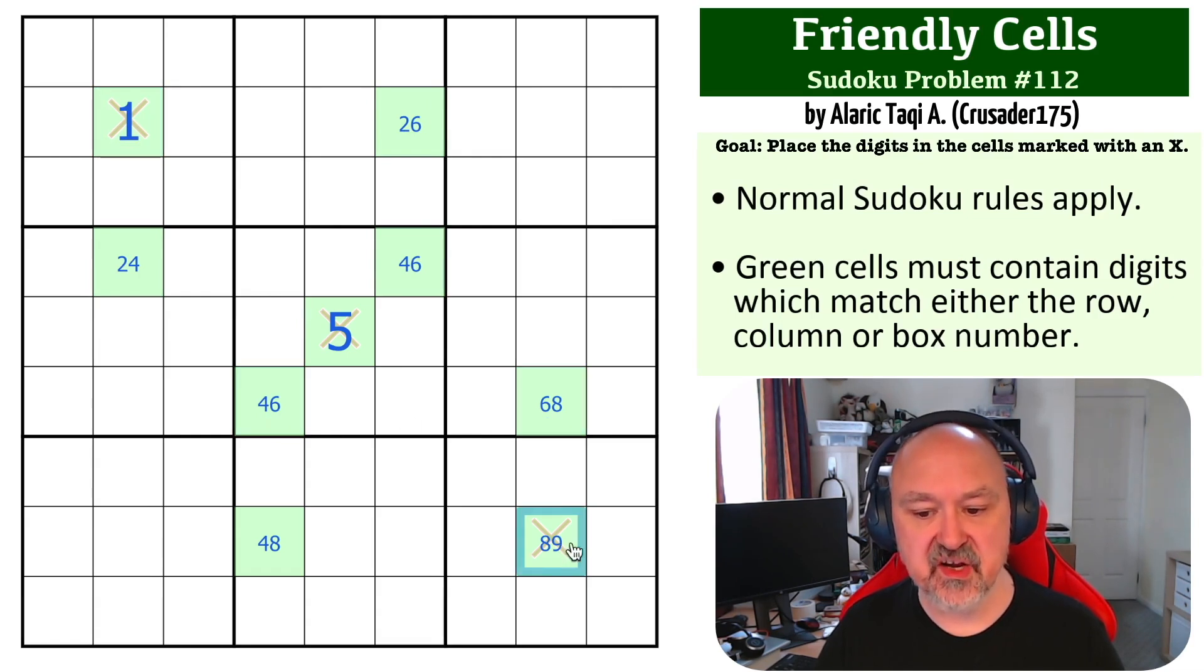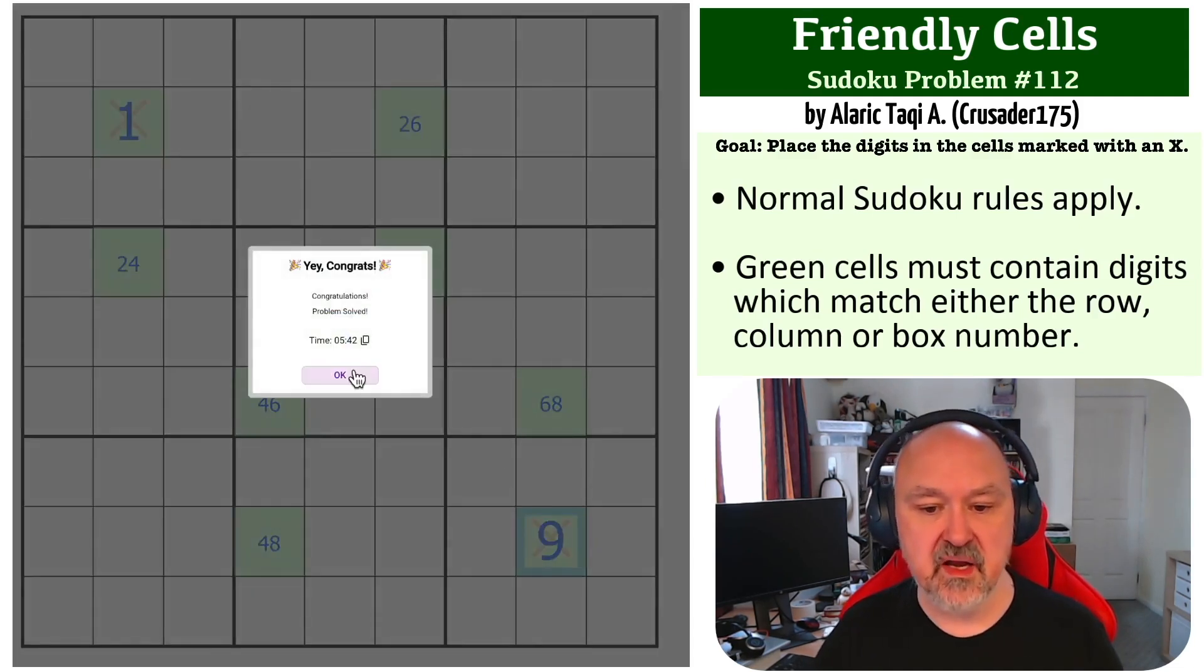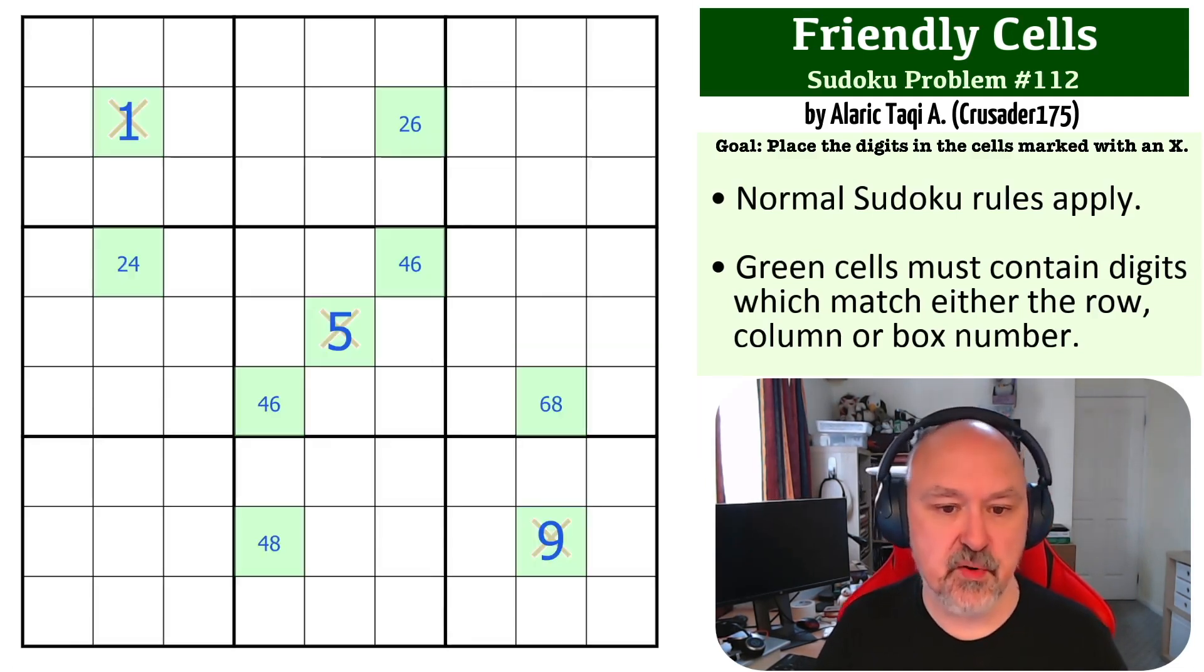You could ask yourself what happens if this is an 8, or the more proper way is: if this is a 4, this is an 8. If this is a 6, this is an 8. So one of those two must be an 8. That cannot be an 8 and therefore must be a 9. And that is the solution to this problem.